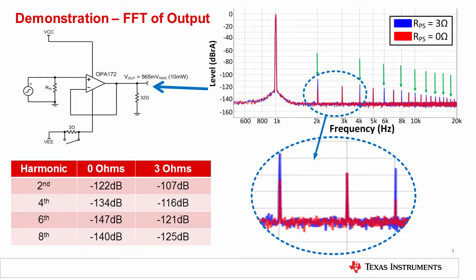To demonstrate this, let's look at an OPA172 with a 32-ohm load. The load was intentionally selected to be a low value so that the current the op amp sources and sinks from the power supplies would be significant. We also added a 3-ohm source impedance to the supply with a switch across it so that the source impedance could be shorted to 0-ohms, allowing us to compare the ideal case to the 3-ohm case. The FFT result for both cases is shown here, where the 3-ohm case is shown in blue and the 0-ohm case is shown in red. We see that the even harmonics are substantially larger in the case where the source impedance is 3-ohms than in the case where it is 0-ohms.